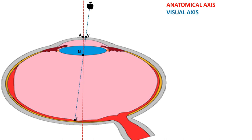Coming to the visual axis, it is basically the line of sight, which means technically it is a line from the point of fixation to the fovea, passing through the nodal point of the eye. The point on the cornea through which the visual axis passes is marked V. Angle alpha is the angle formed between the anatomical axis and the visual axis. However, this angle is very negligible in terms of degrees or minutes of arc, so for ease of interpretation, rather than being expressed in angular deviation, it is expressed as the distance in millimeters between the points of intersection of these two axes on the cornea — so the distance AV is identified as angle alpha.